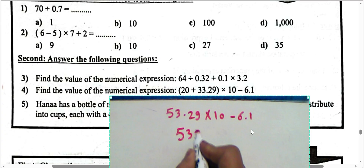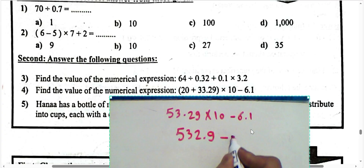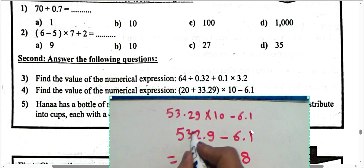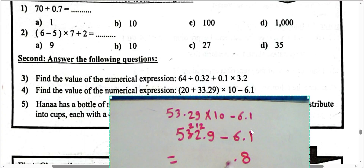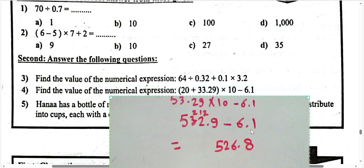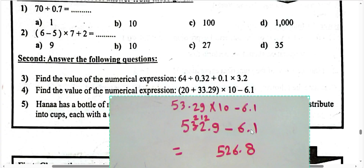Subtract 6.1: 9 minus 1 equals 8; for 2 minus 6 we borrow, so 12 minus 6 equals 6; write 2 and write 5. The answer is 526 and 8 tenths.